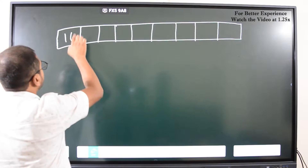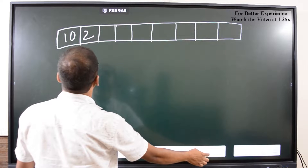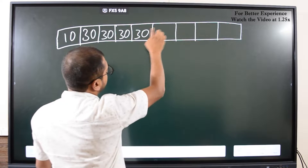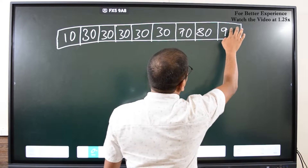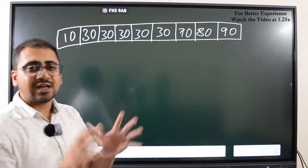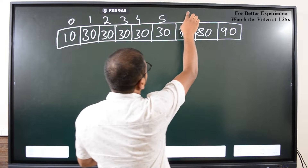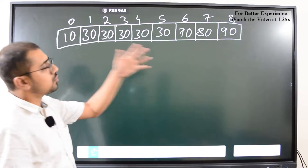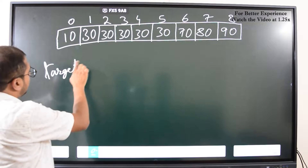Suppose I have an array of integers: 10, 30, 30, 30, 30, 30, 70, 80, and 90. The array is sorted — it won't work if it's unsorted. We have nine elements here, and the indexes are from 0 to 8.